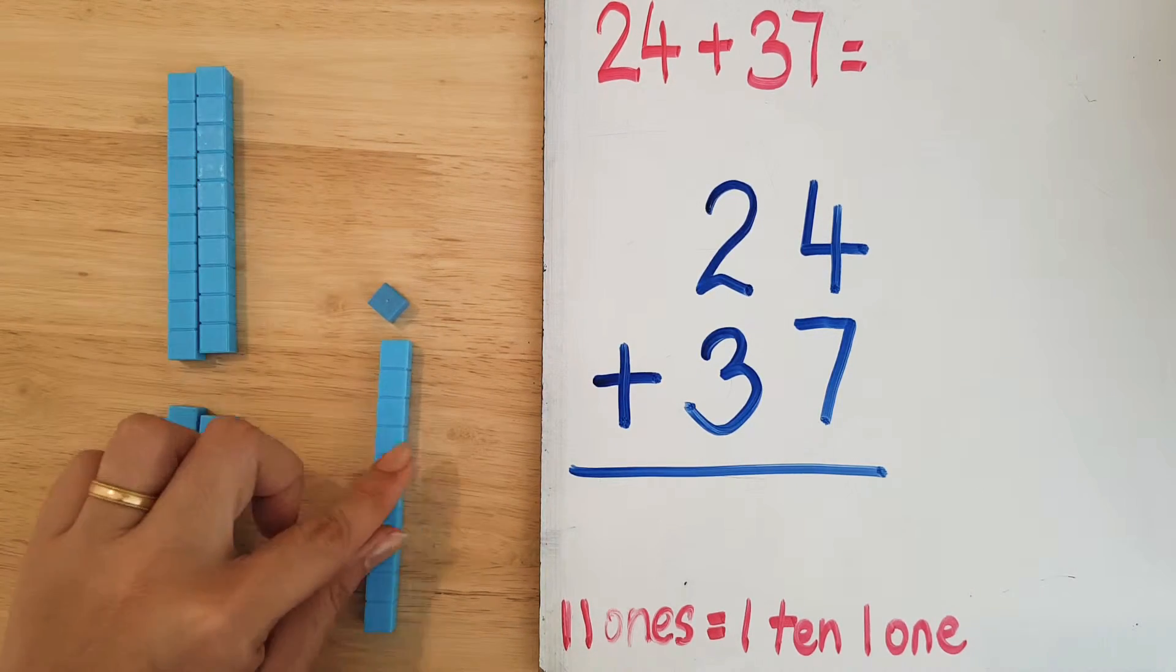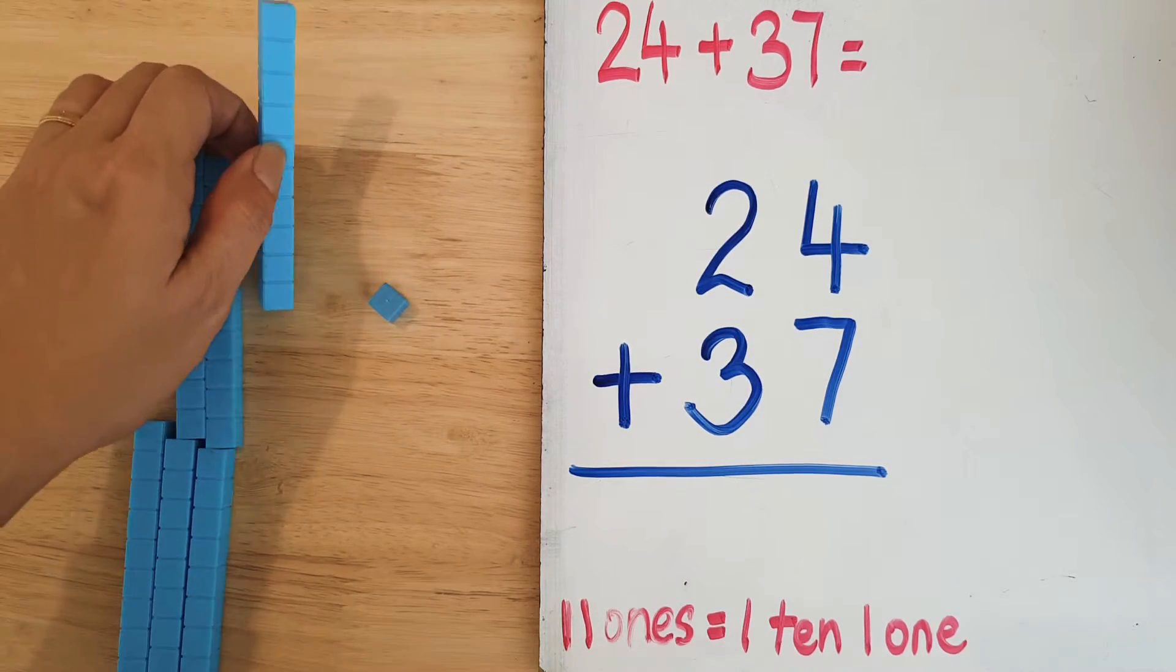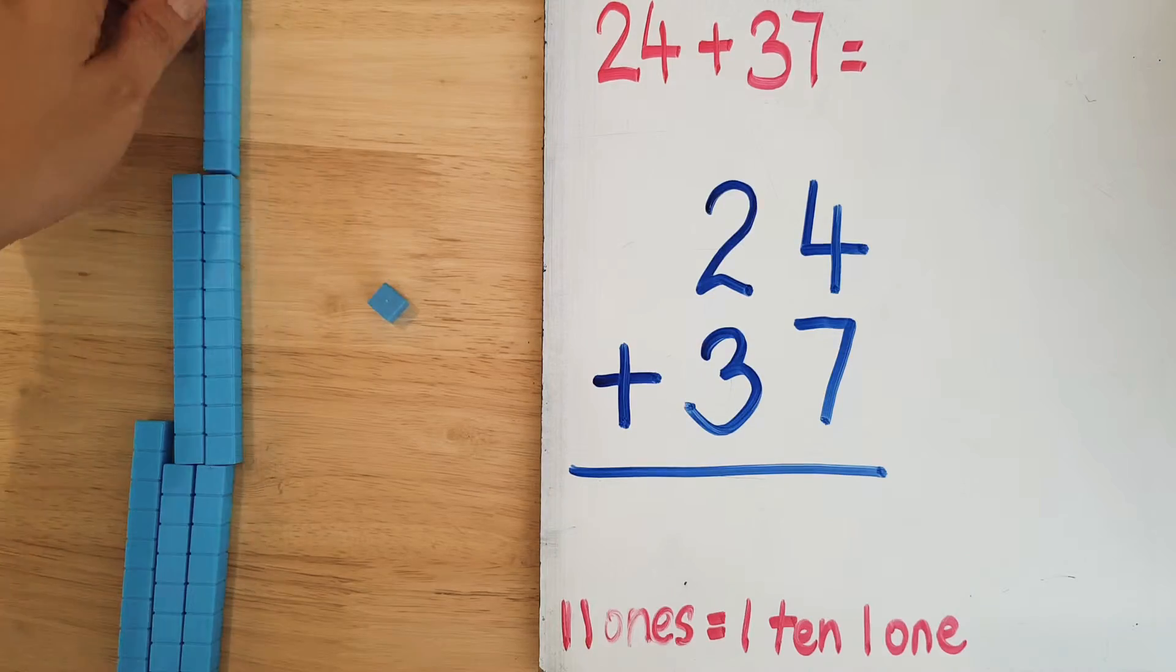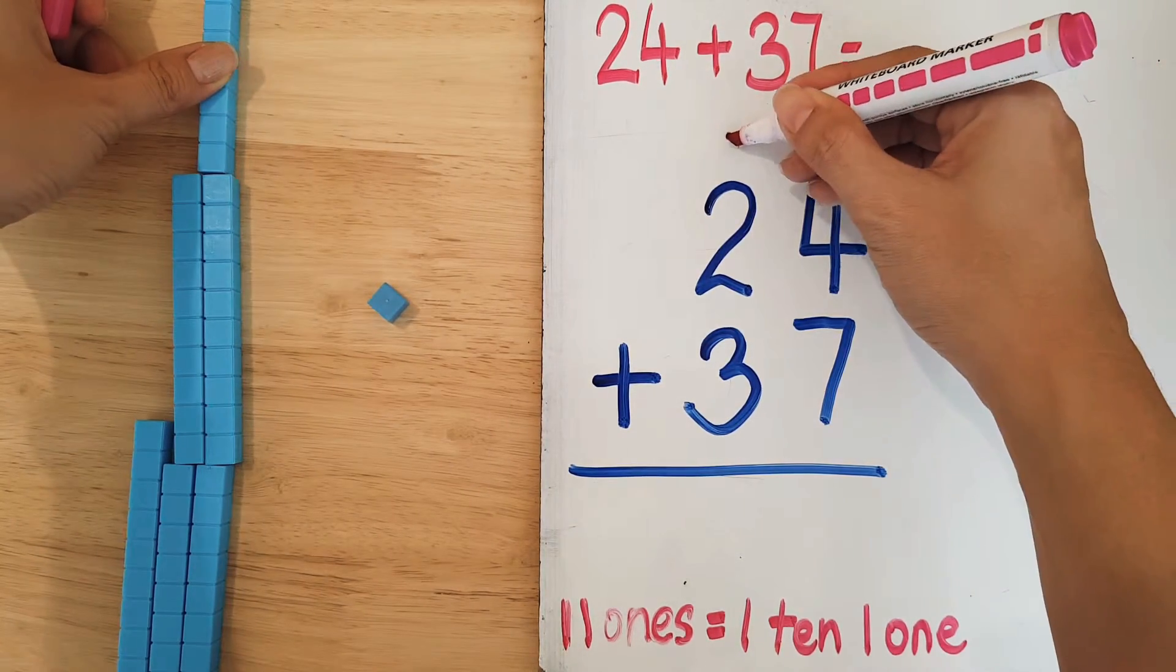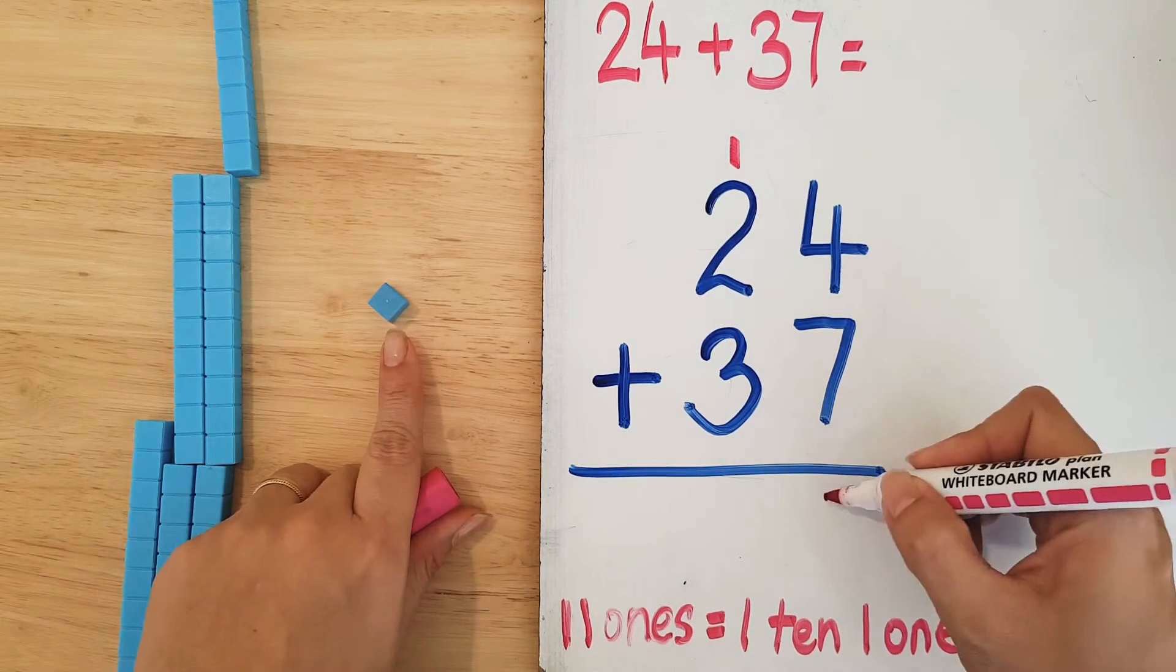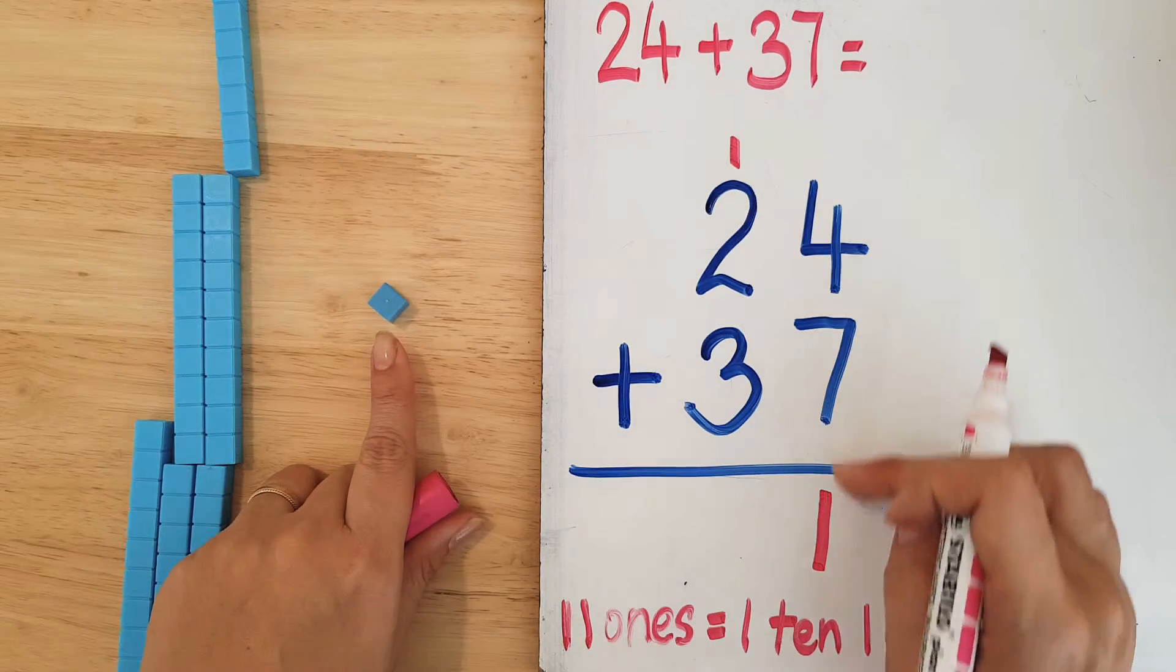And now because this is a ten, I'm not going to leave it in the ones place. I'm going to put it together with the other tens. I put this one ten up there, and I have this one ones. Now after we have added the ones, we have regrouped.